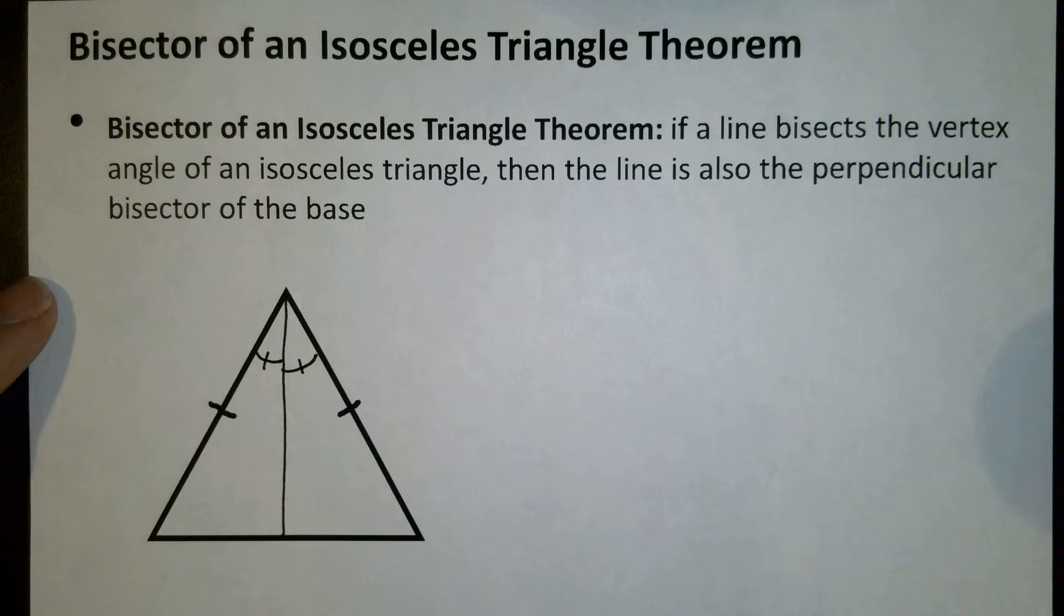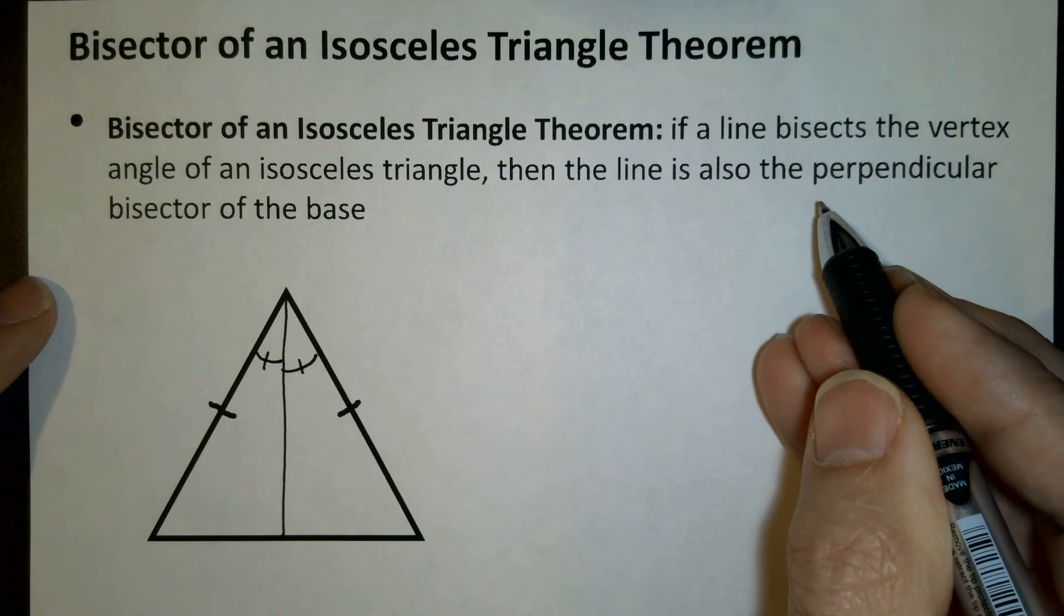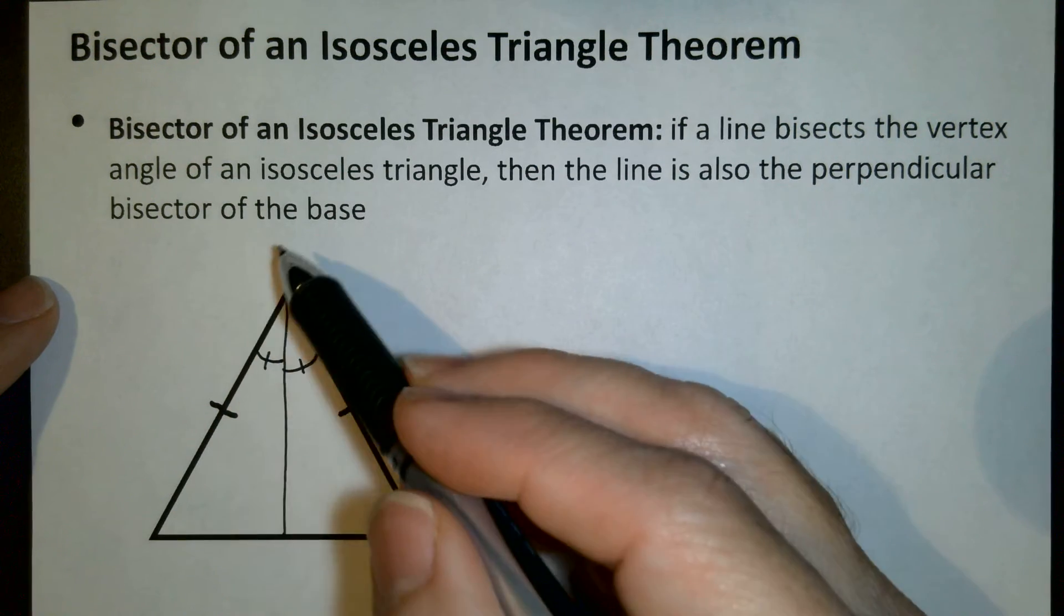If that happens, then the line is also, first of all, perpendicular. And secondly, a bisector of the base.